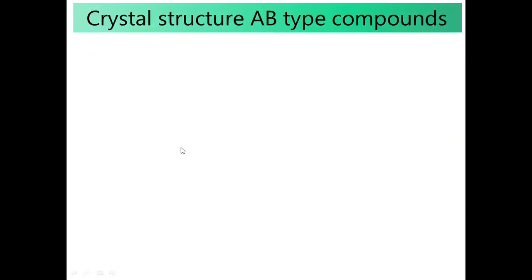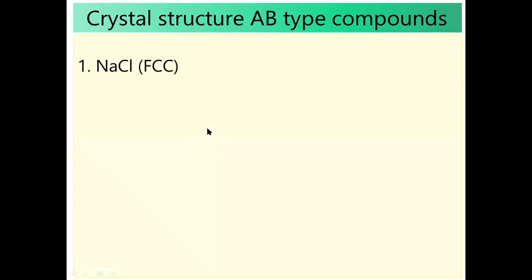AB type crystal structure includes NaCl, CsZn chloride, ZnS. The first structure is NaCl. NaCl follows the FCC structure.